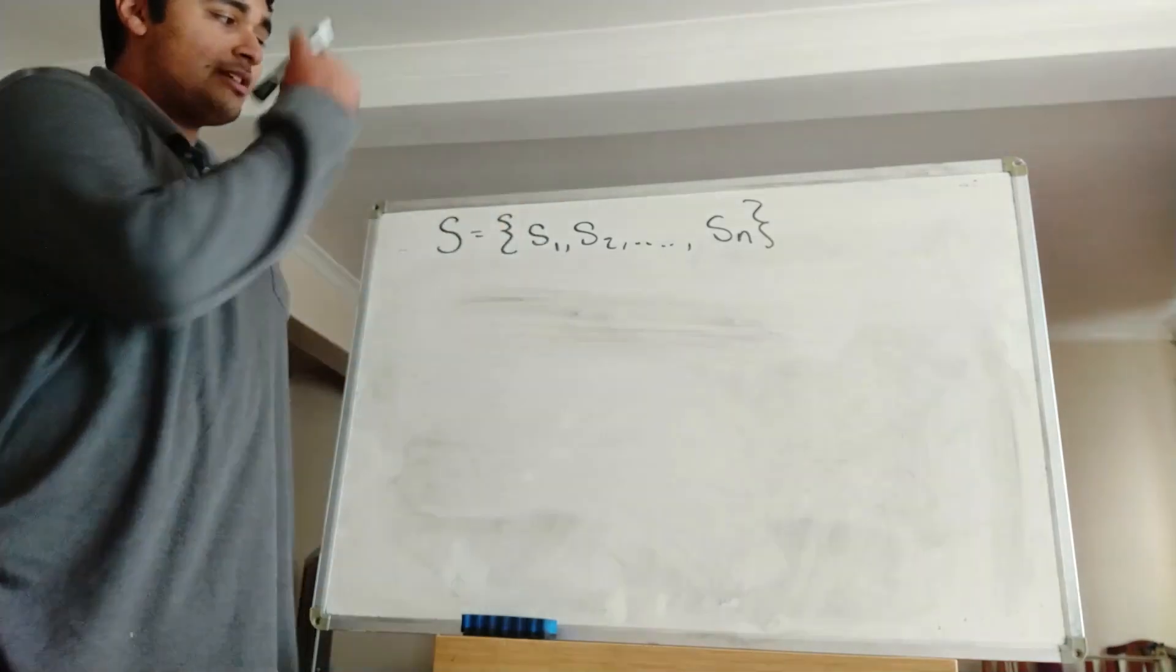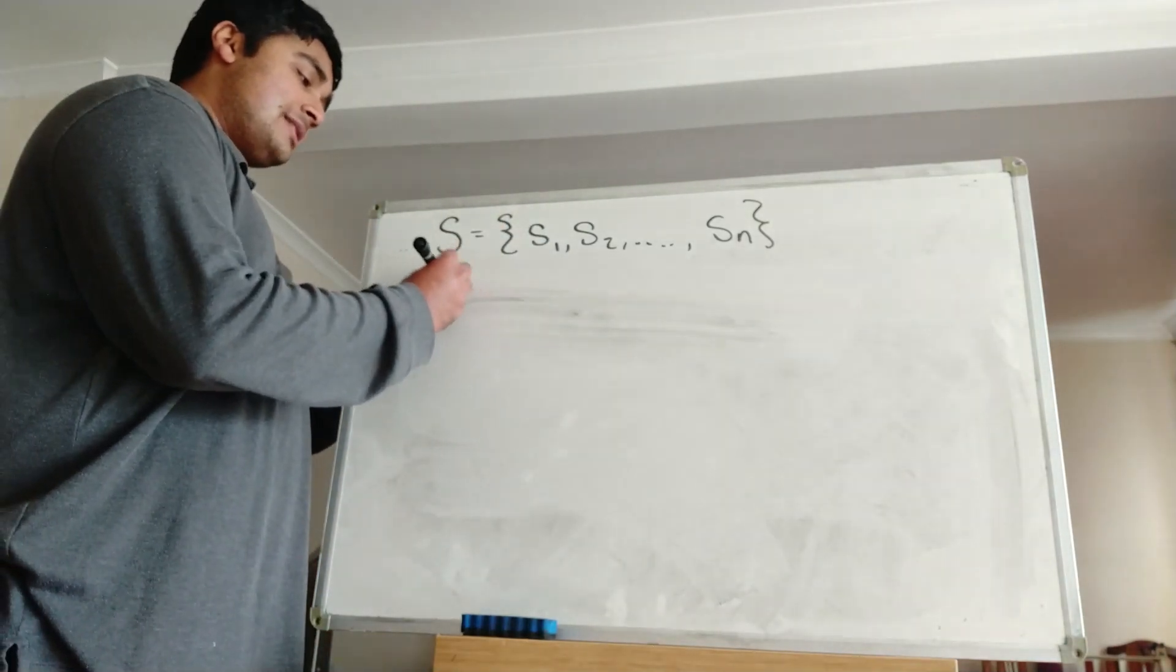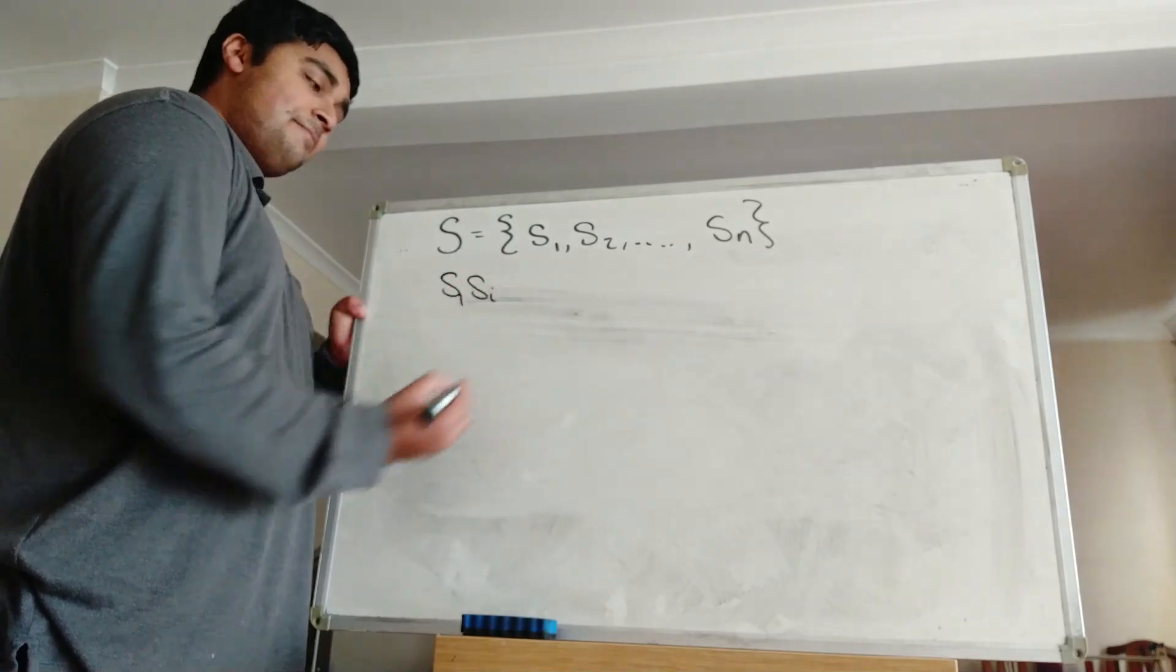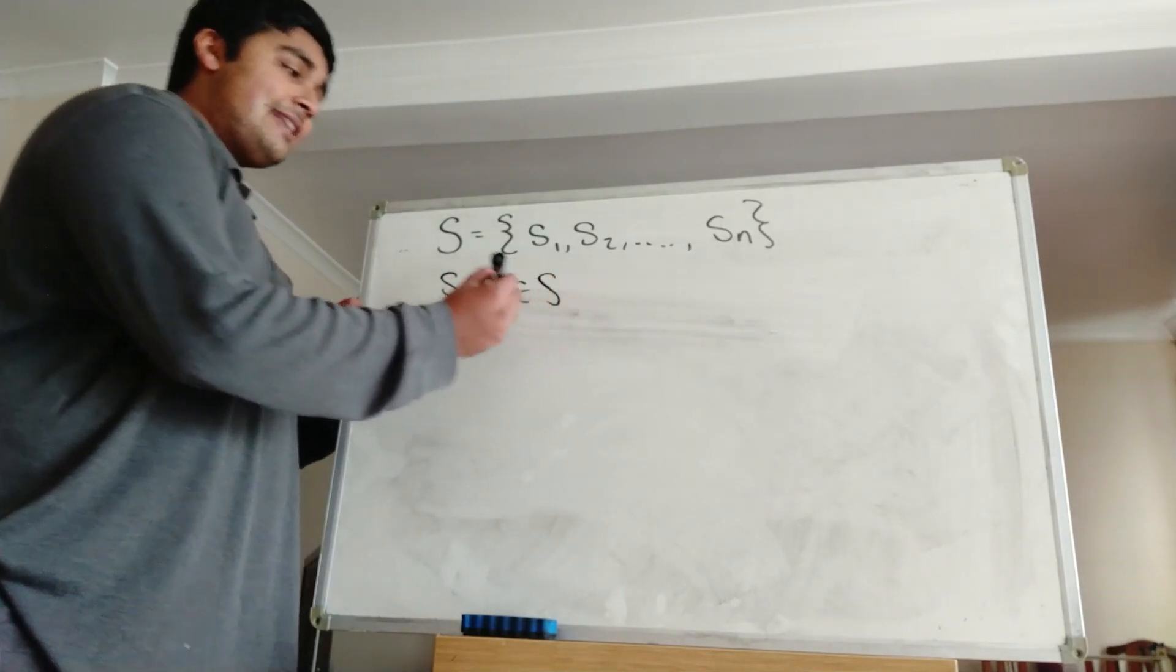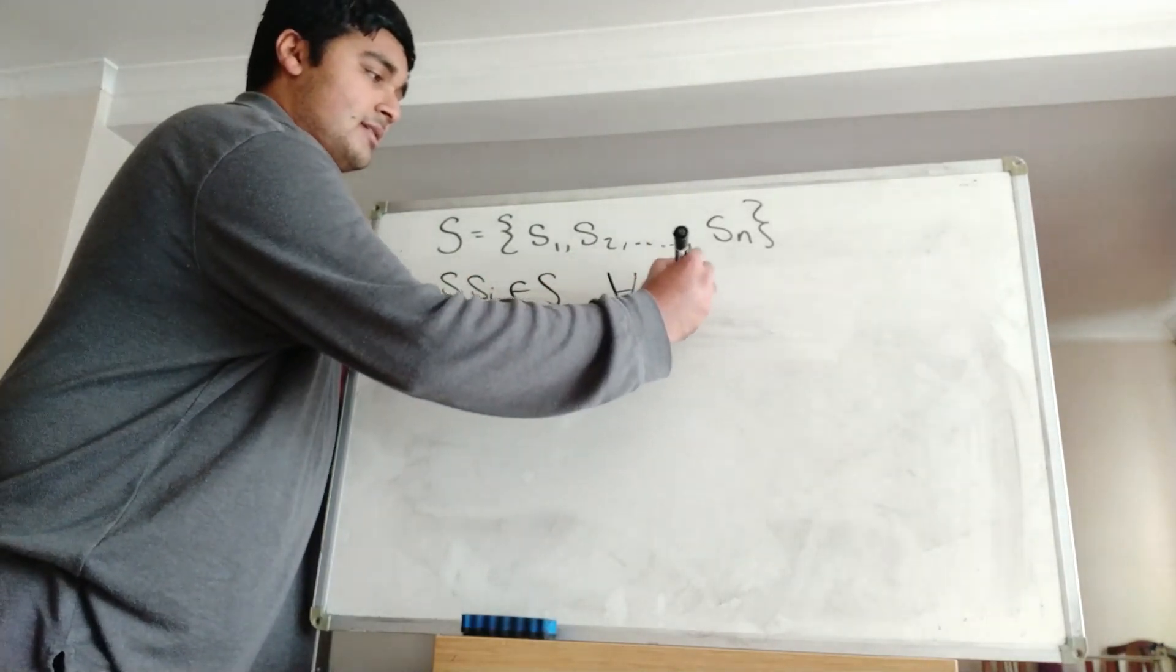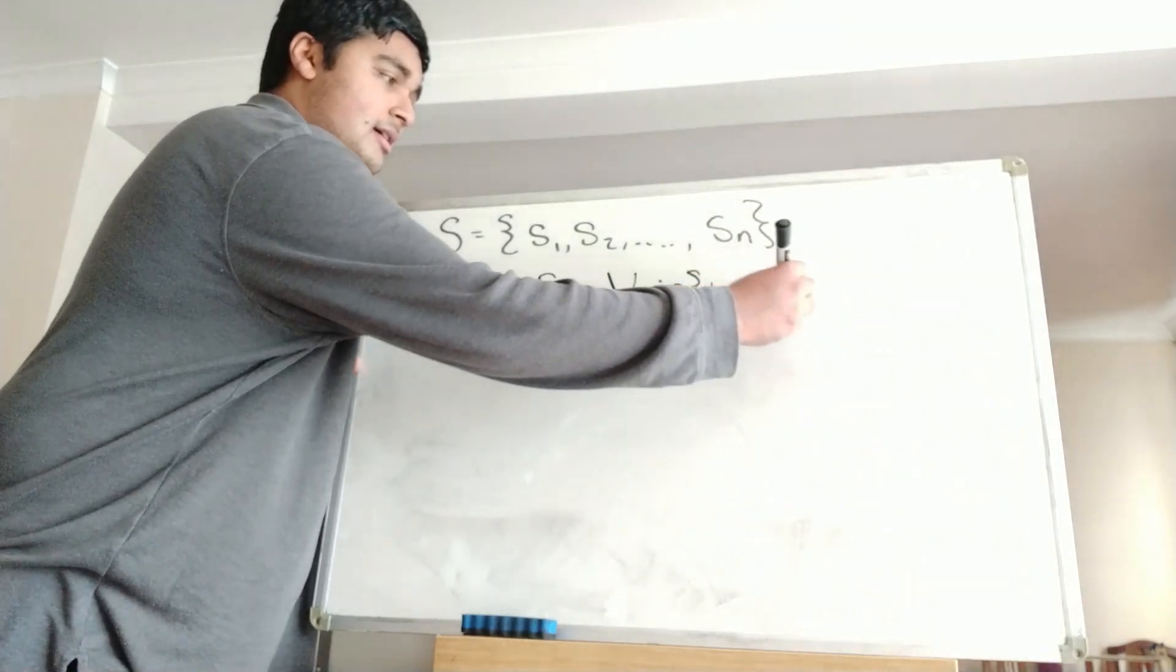So that tells us that if you look at S1, we know that S1 times SI is going to be in S, and that holds for all I from 1 all the way up to N.